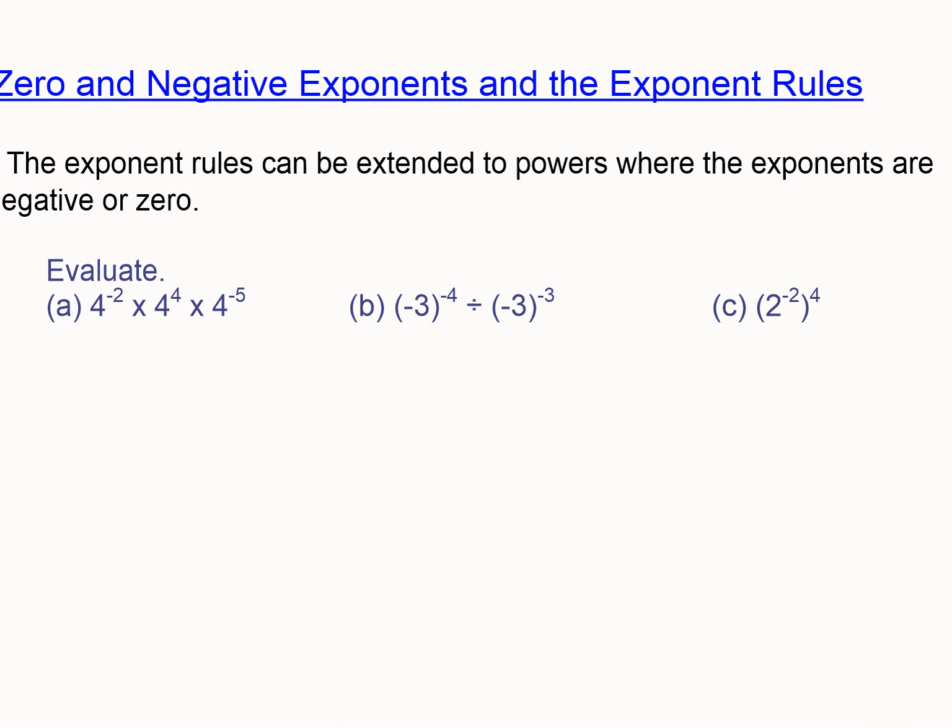What happens when you have exponent rules? Well, you do the same thing. If the bases are the same and you're multiplying, you add the exponents. So in this case, the bases are all 4. We're multiplying. We can add. So negative 2 plus 4 plus negative 5 is negative 3. So that becomes 4 to the negative 3.